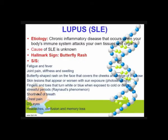Since this is an autoimmune disorder, the source or origin of this disease is unknown. Chronic inflammatory disease occurs when your body's immune system attacks your own tissues and organs, and the etiology is unknown. Again, the hallmark sign for this autoimmune disorder is your butterfly rash.